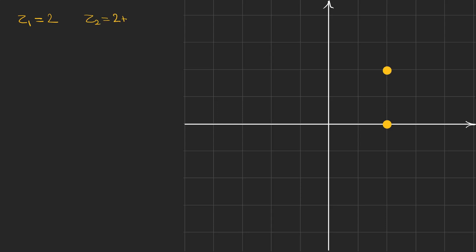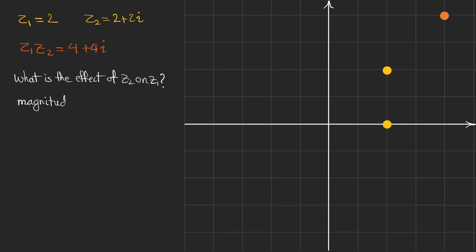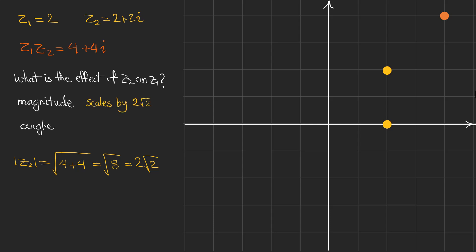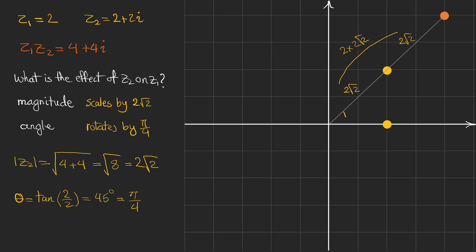Suppose z1 is 2 and z2 is 2 plus 2i. Multiplying them gives 4 plus 4i. I want to know the effect of z2 on z1 in terms of magnitude and angle. The magnitude of z2 is 2 times the square root of 2, meaning it scales any number it multiplies by that factor. Here the magnitude of z1 was 2 and becomes 2 times 2 root 2. The angle of z2 is 45 degrees, so multiplying by z2 also rotates a number by 45 degrees.